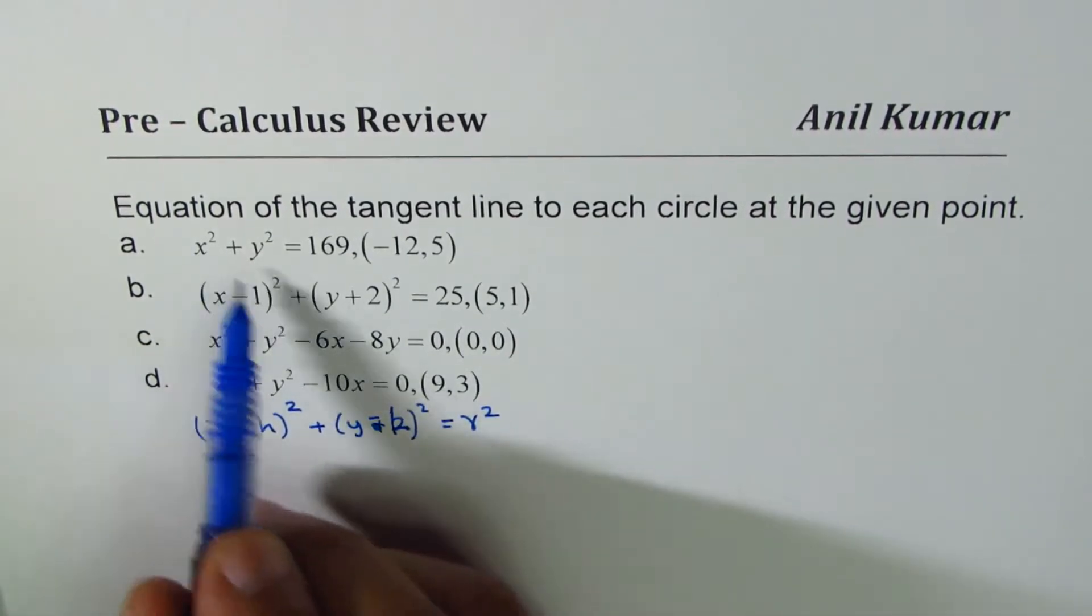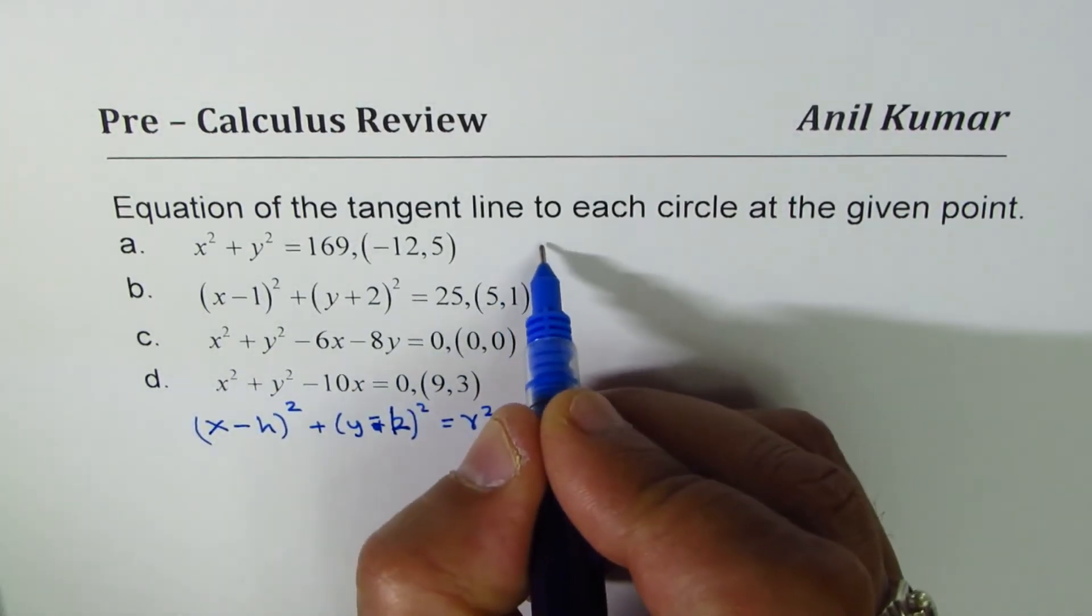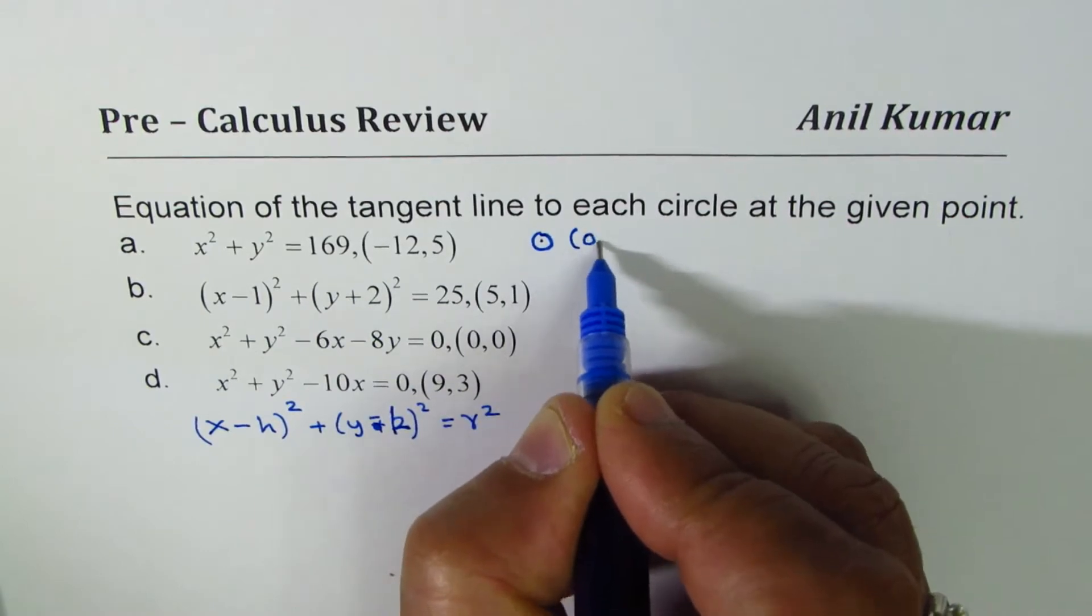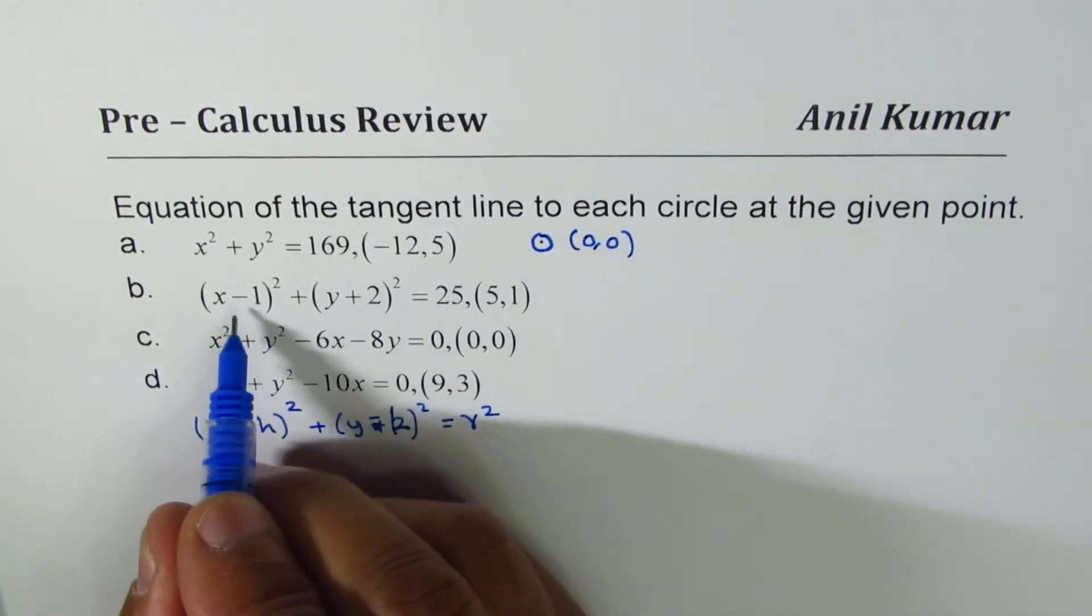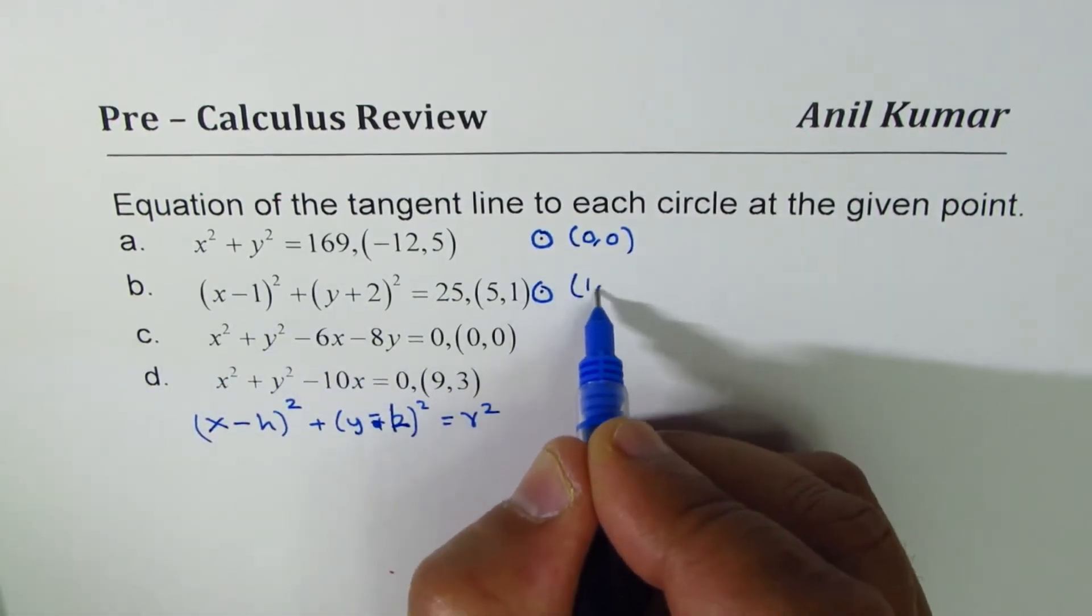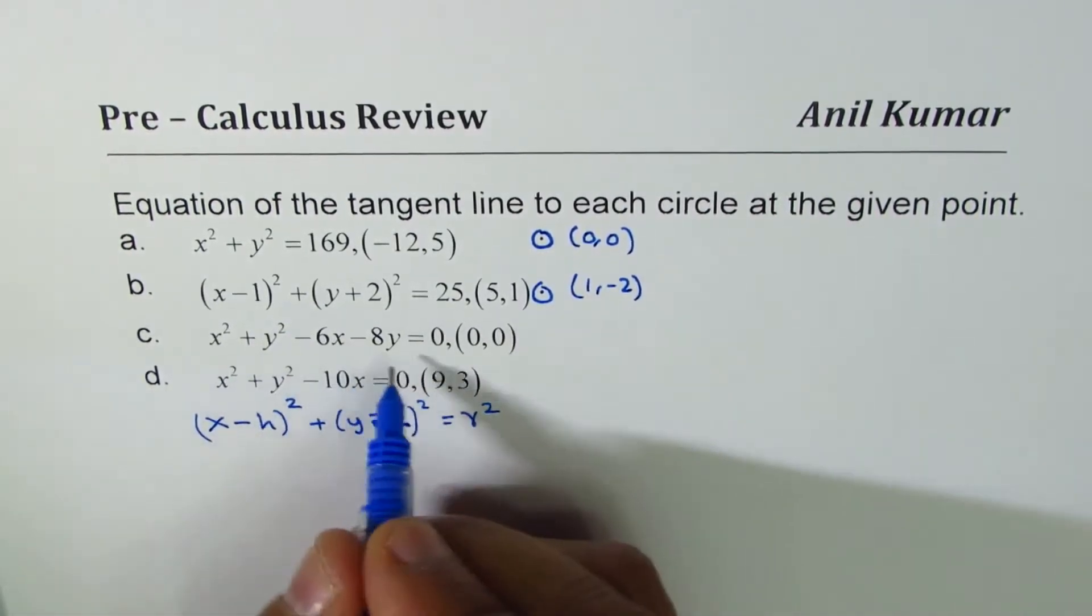So here, if you want to put the center, the center will be at (0, 0) in the first case. For the second one, the center will be at the point (1, -2).